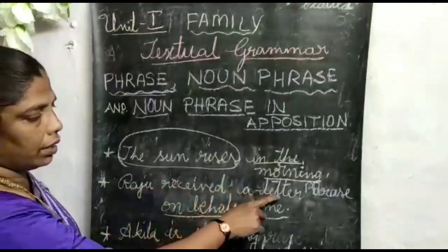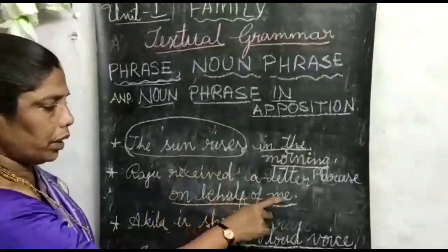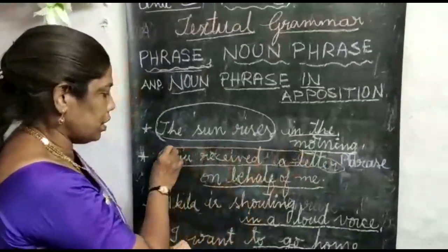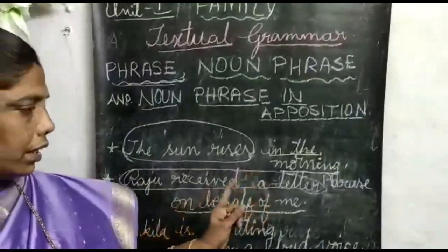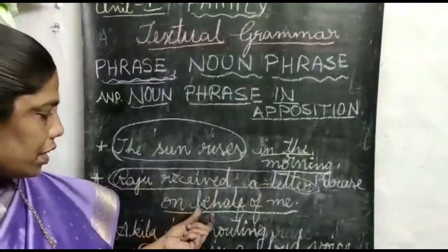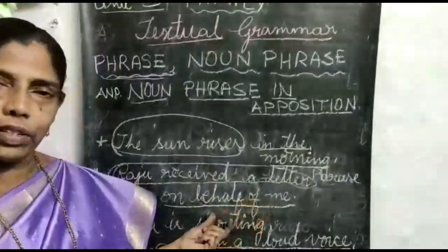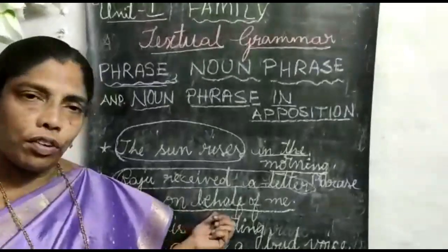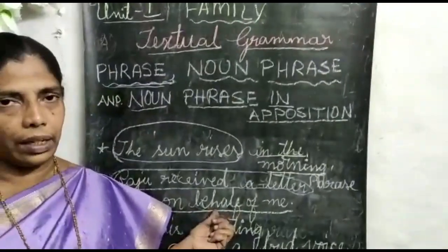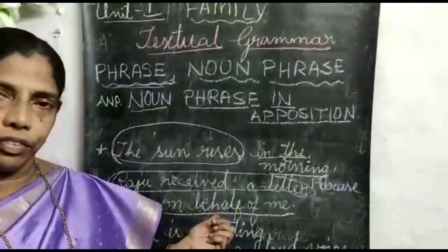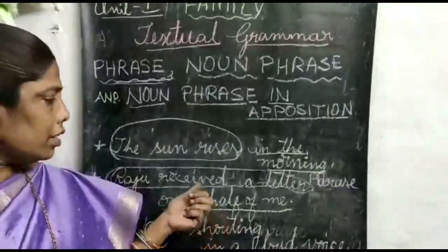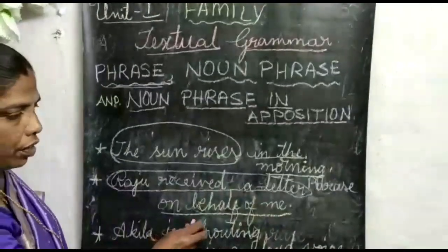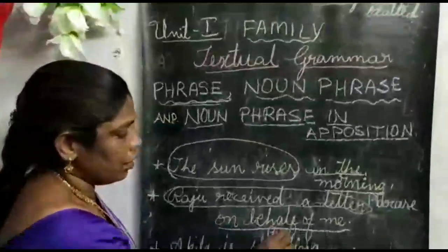The next example: Raju received a letter on behalf of me. If we see only 'on behalf of me,' there is no complete meaning, because here there is no subject and there is no finite verb or predicate part. So this is a phrase. 'On behalf of me' is a part of the sentence 'Raju received a letter on behalf of me.' It is also a phrase.